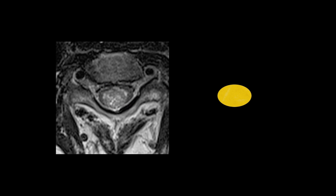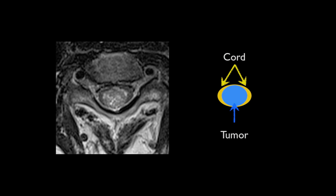As ependymomas arise from the central canal, it is not surprising that they are located centrally within the cord and expand it outward. One can readily see the relatively normal cord having been pushed to the periphery by a central high T2 signal heterogeneous mass, which represents the tumour.